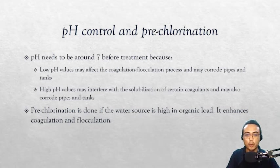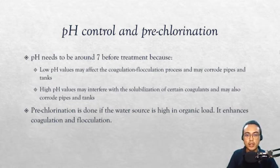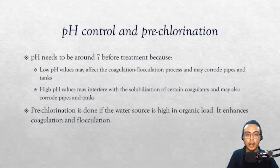Starting with pH control: it is ideal that water pH is as close to seven as possible before treatment begins, because low pH may affect the coagulation-flocculation process and may corrode pipes and tanks, while high pH has basically the same effect. pH control is achieved by adding acetic acid, hydrochloric acid, or other suitable acids if pH is too high, or sodium hydroxide or sodium carbonate if pH is too low.